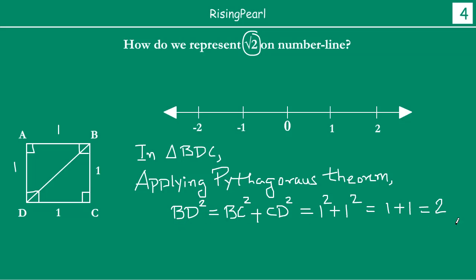which is equal to two. So if BD square is two, therefore we can say BD, the length, is square root two.